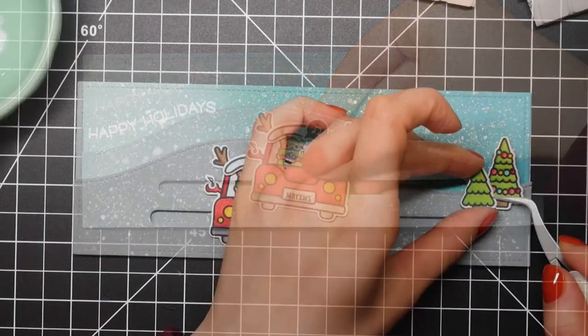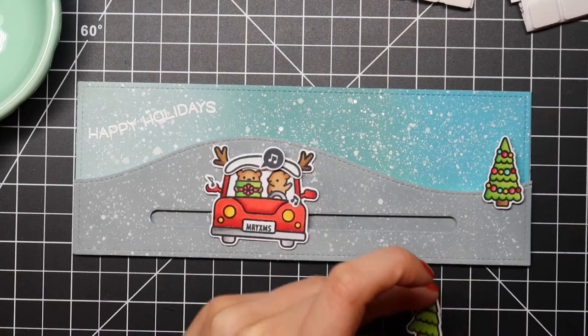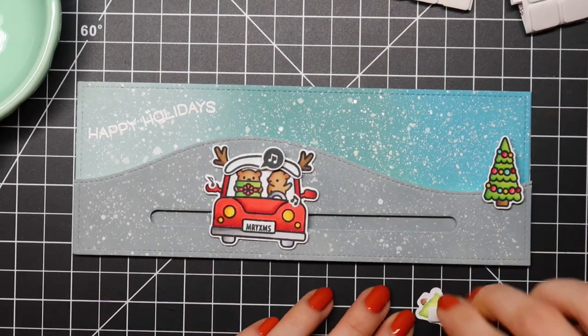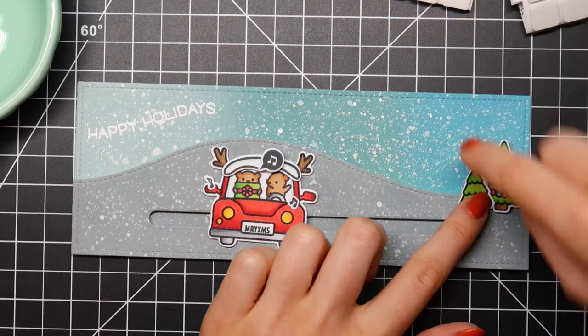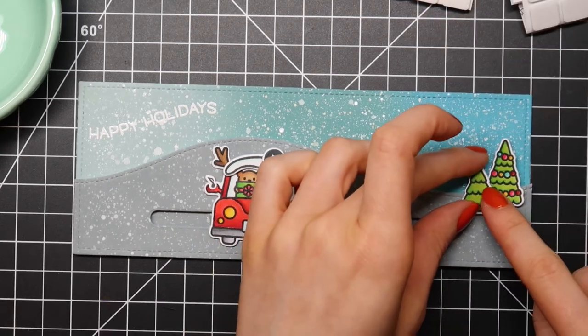I'm positioning that onto my ink blended background. I'm also adhering my colored images using foam adhesive and some of the Lawn Fawn glue tube.